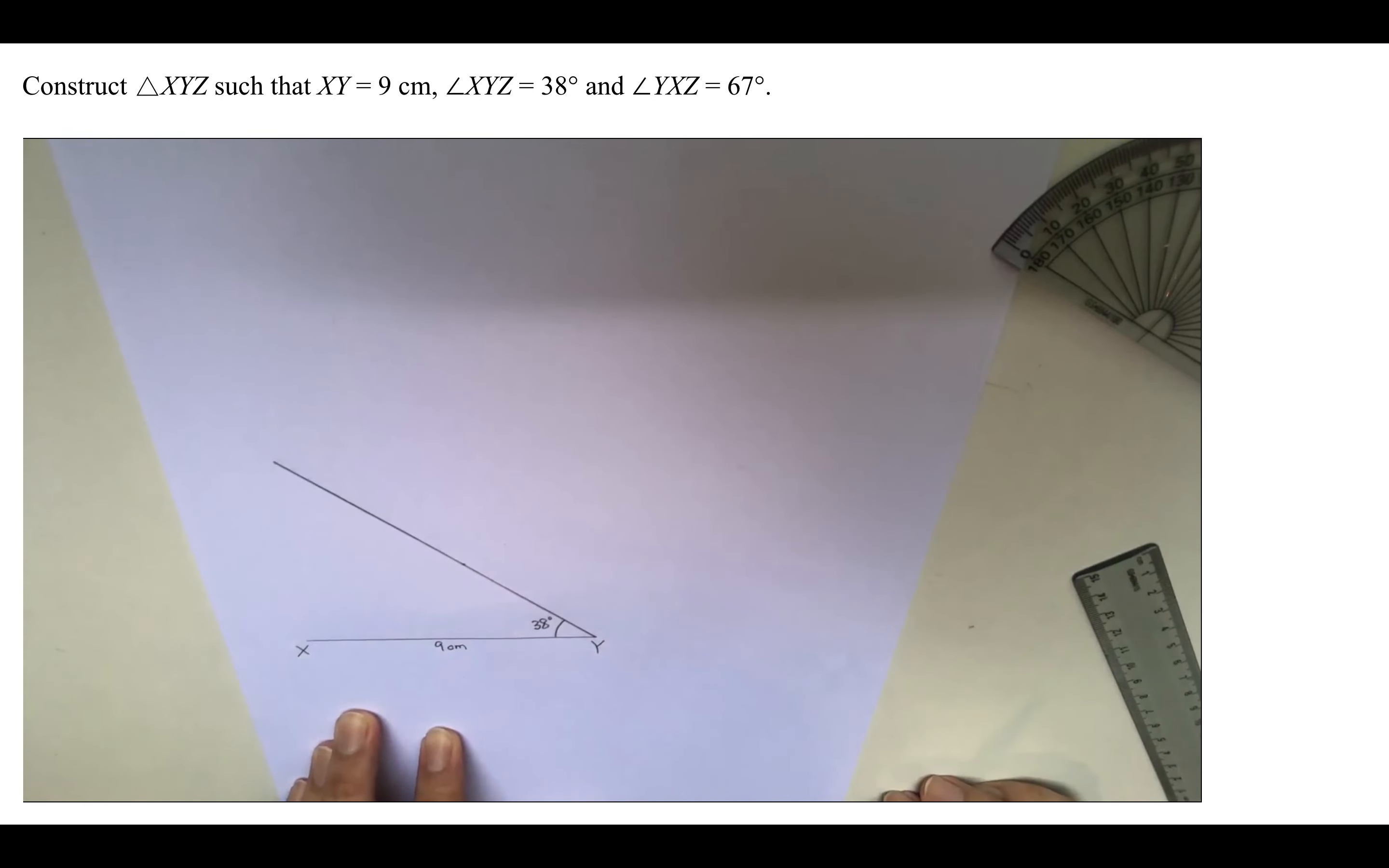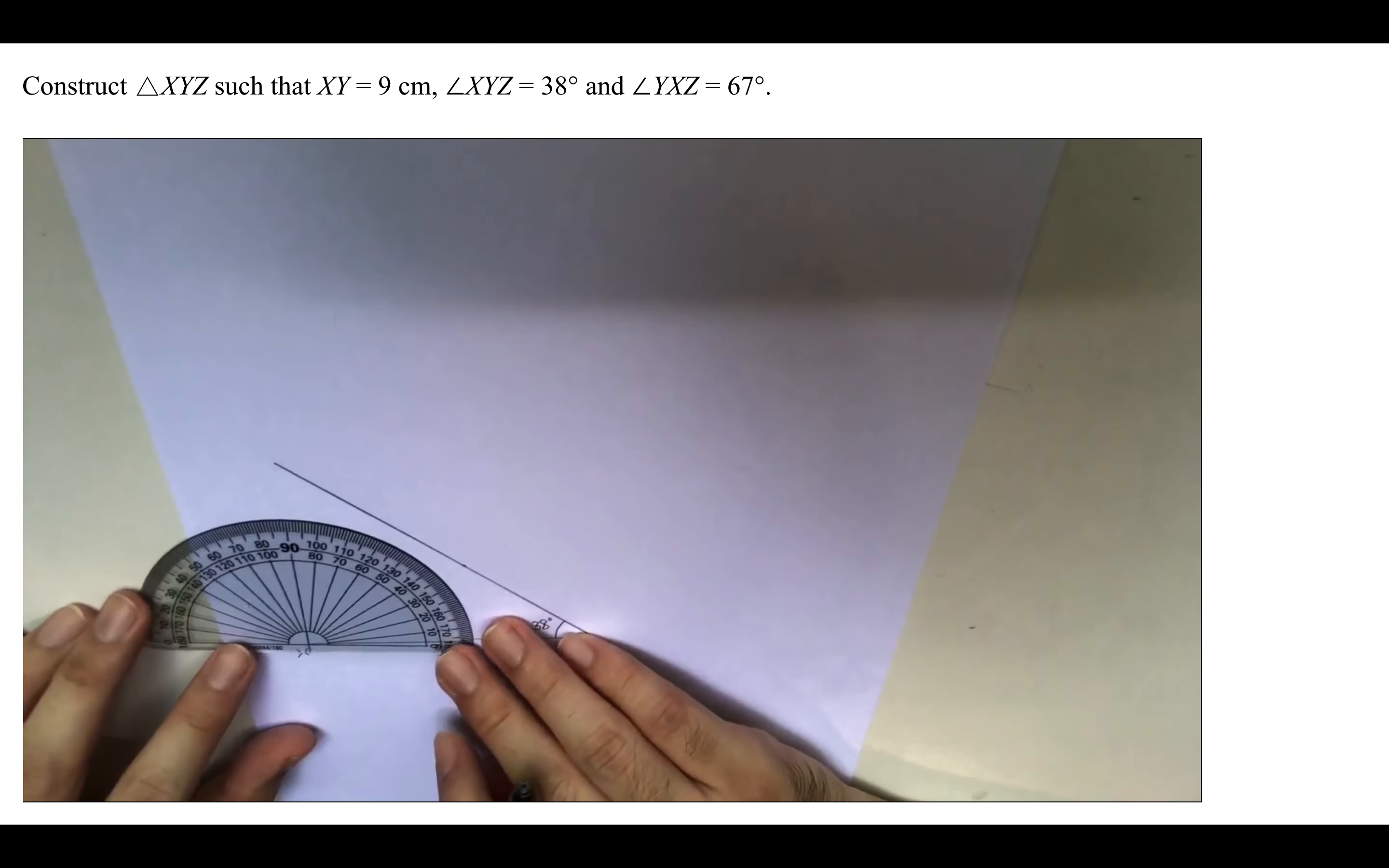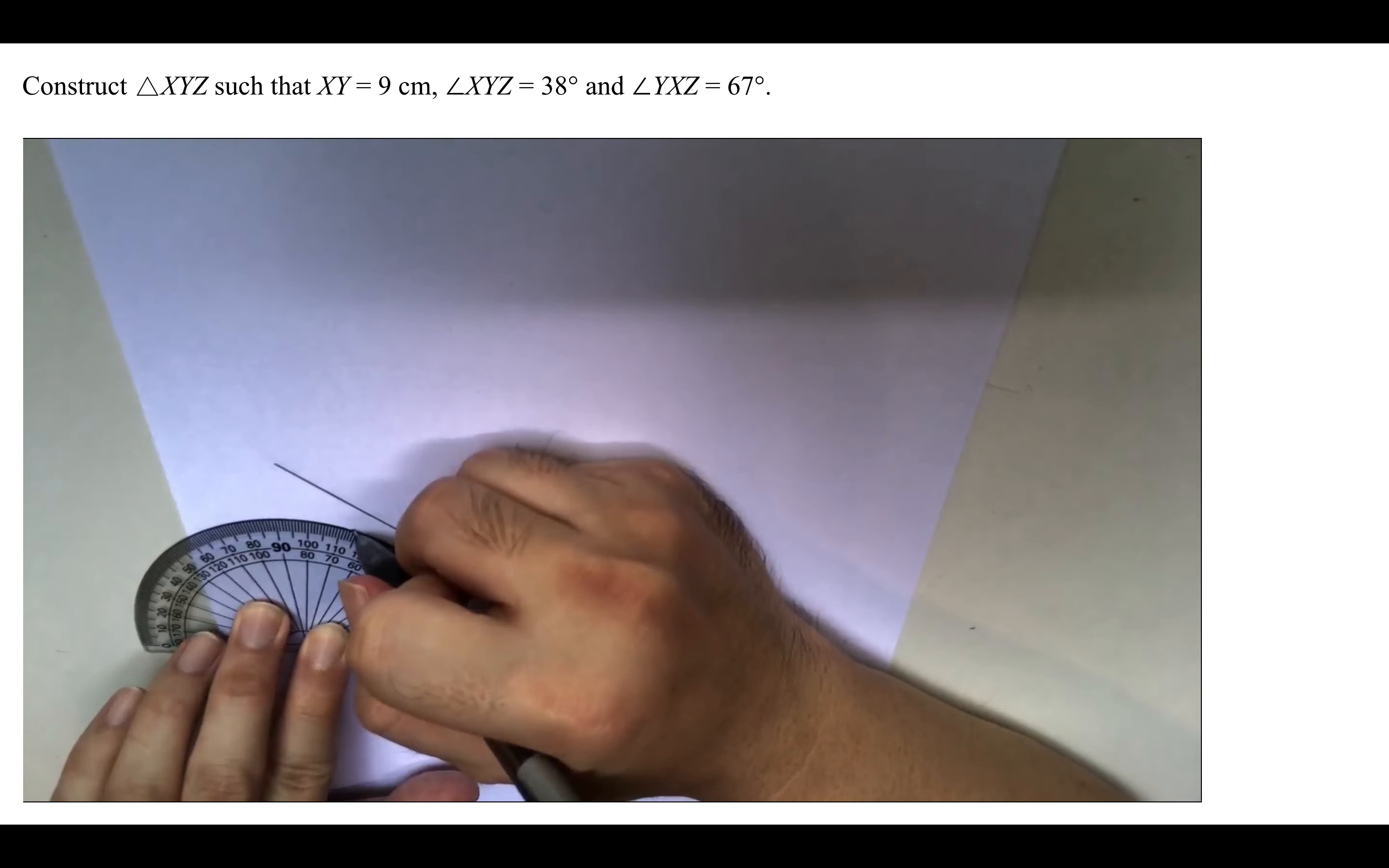So the next piece of information tells us that angle YXZ is 67 degrees. So we are going to use our protractor again, place it at point X, and measure 67 degrees, which will be over here.